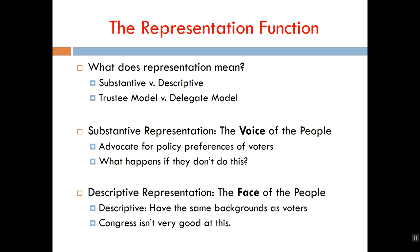One big distinction we need to make is between substantive representation and descriptive representation. To provide substantive representation is to create policies that comply with the wants, needs, and interests of the people. A government is substantively representative when the policies it creates and the results of its elections reflect popular interests. Congress is actually pretty good at supplying substantive representation — the policies that a congressman or congresswoman seeks to pass do, by and large, tend to coincide with the wants and needs of their constituents. 'Constituent' is just a fancy word for voter.